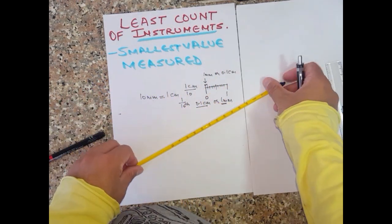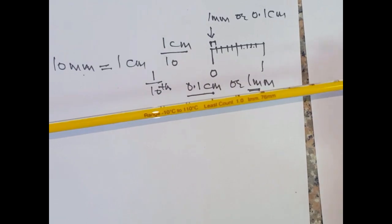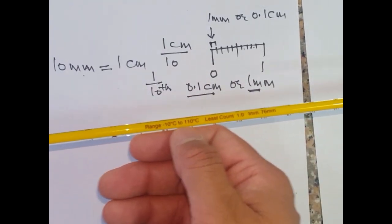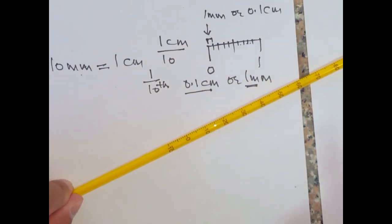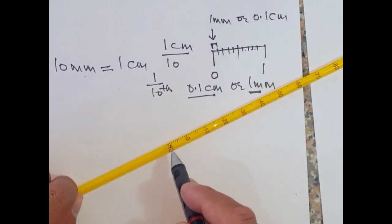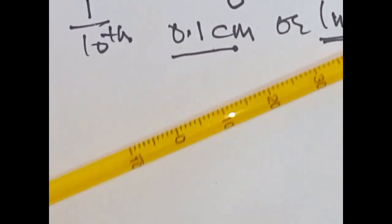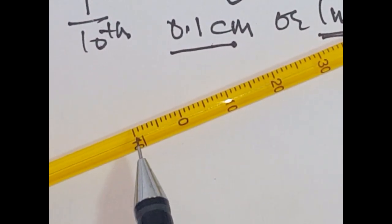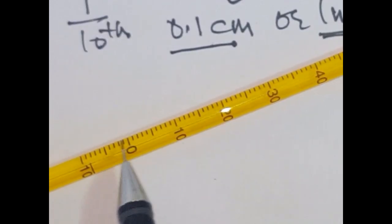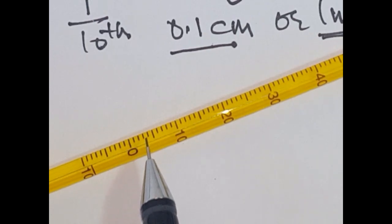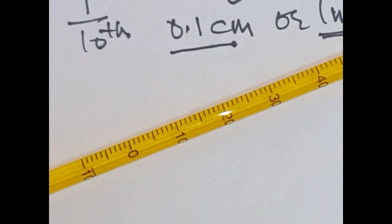Let us find the least count of this thermometer. First, let's find the range: it's written at the back and the range is minus 10 degrees to 110 degrees. But what is the smallest value it can measure? Let's zoom in and observe. Starting from 0 degrees to 10 degrees, counting the divisions: first, second, third, fourth, fifth, sixth, seventh, eighth, ninth, and tenth — so from 0 to 10 degrees there are 10 divisions.